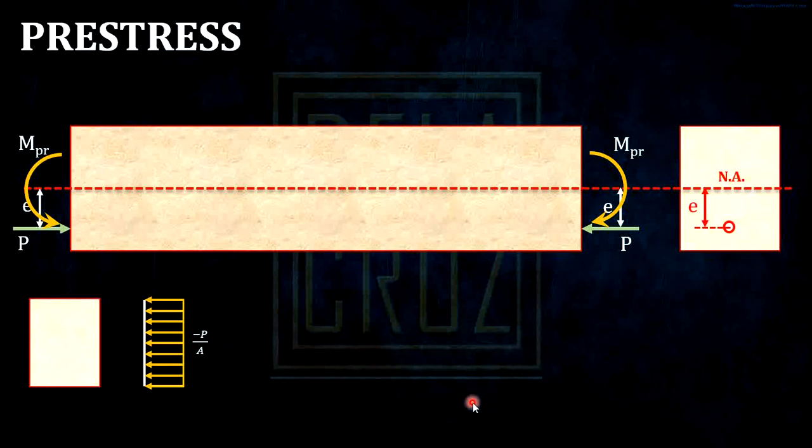Because of this moment, it will also induce a flexural stress or what we call bending stress. Recall the formula of bending stress: that is MY over I, or sometimes MC over I. The dilemma here is how to identify which portion of the beam will be in tension and in compression because of this moment.